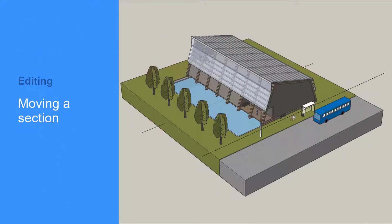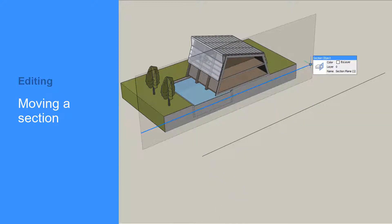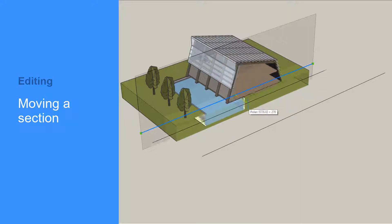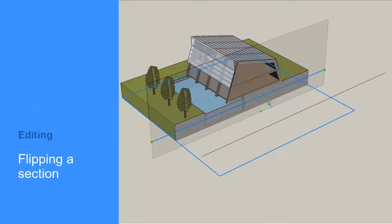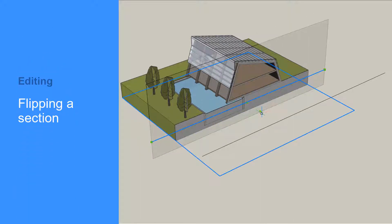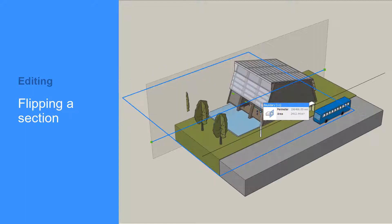A section element has three grip edit points. Selecting the section's handle turns the grips on for editing. You can move the midpoint grip to reposition the section plane. If you left-click the arrow displayed near the midpoint grip, you will flip the clipping direction of the section.